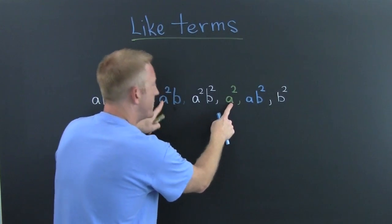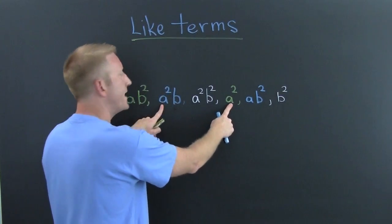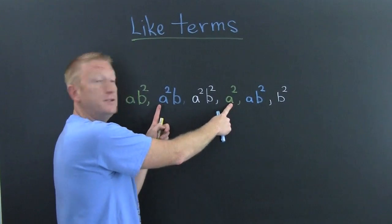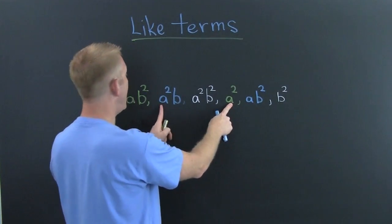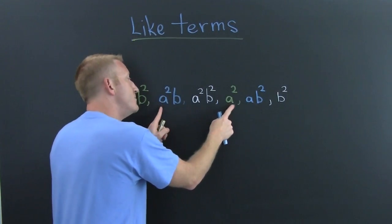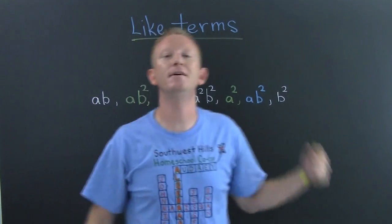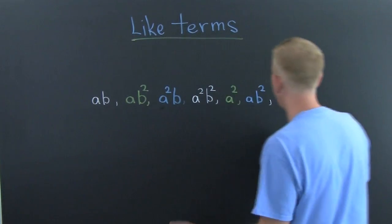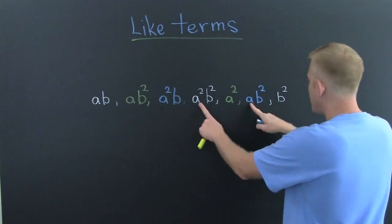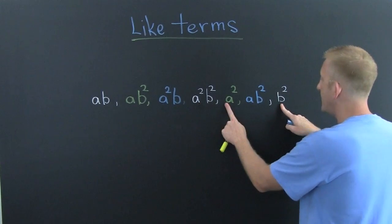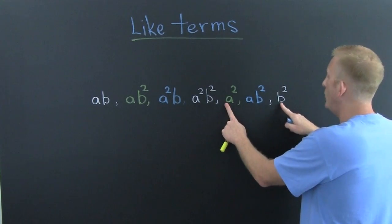So wait, there's an A squared — so these must be alike. No. Although they do have A to the two, this one is missing a B. I'm starting to think that there aren't any like terms. Are there any like terms?